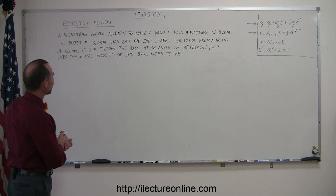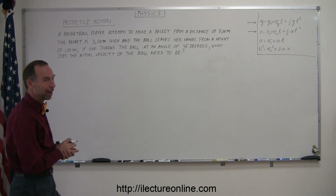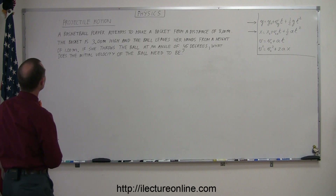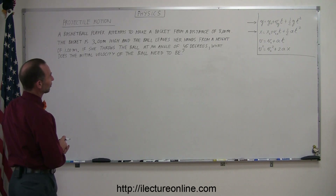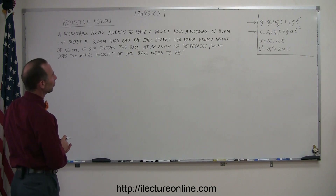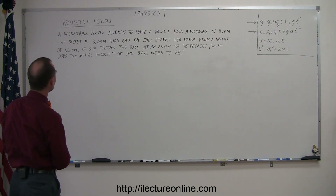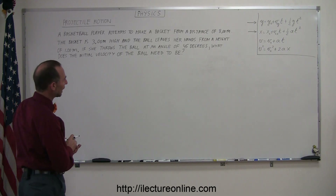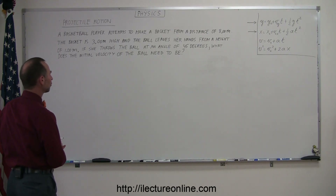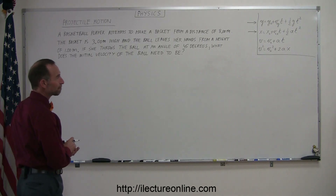Here's another example of how to do a projectile motion problem. Let's read the problem and see what it's all about. A basketball player attempts to make a basket from a distance of eight meters. The basket is three meters high and the ball leaves her hands from a height of one meter. If she throws the ball at an angle of 45 degrees, what does the initial velocity of the ball need to be?